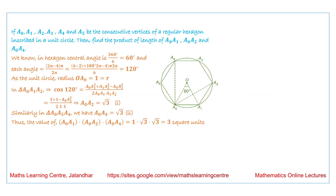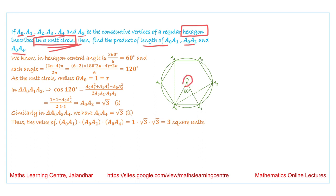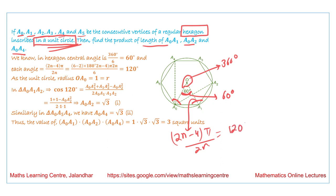The first question: let A₀, A₁, A₂, A₃, A₄, and A₅ be consecutive vertices of a regular hexagon inscribed in a unit circle. Find the product of the lengths A₀A₁, A₀A₂, and A₀A₄. Since it is a regular hexagon, the total angle is 360°, so each central angle is 60°, and each interior angle of the hexagon is 120°.